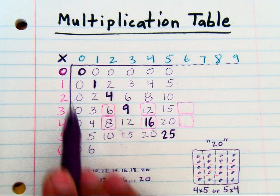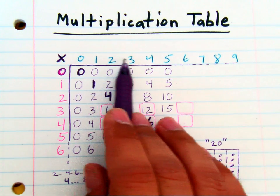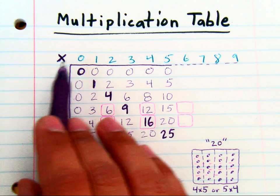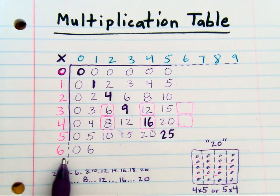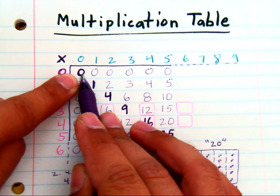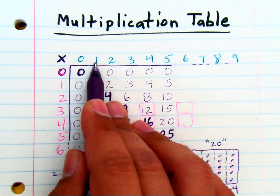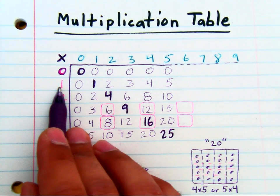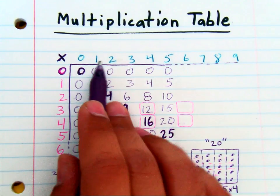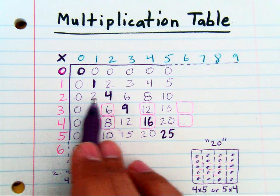That's because when you take one of these single digits on top and multiply it times one of these numbers on the side, the answer is going to meet where those two numbers meet inside the table. So if you have one group with one in each group, you just have one. But if you have one group with two in that group, you got two.